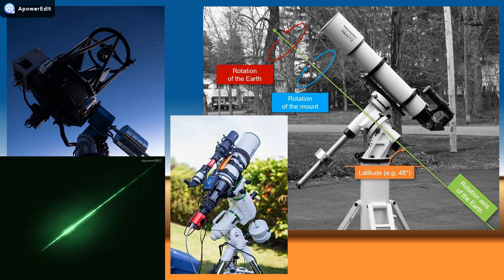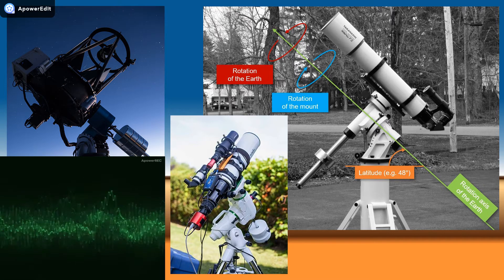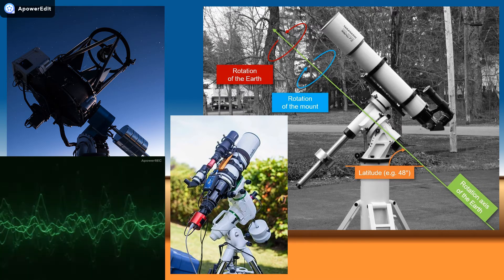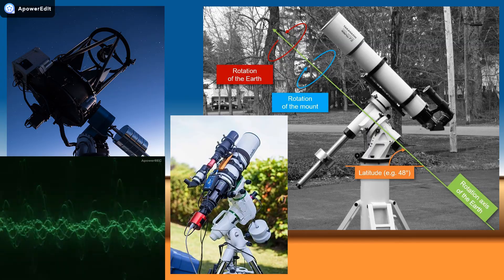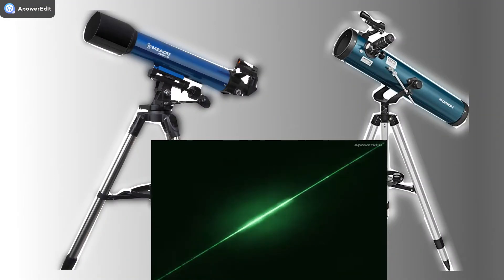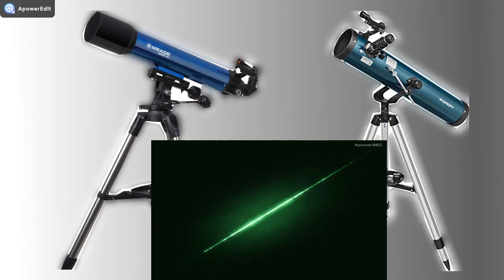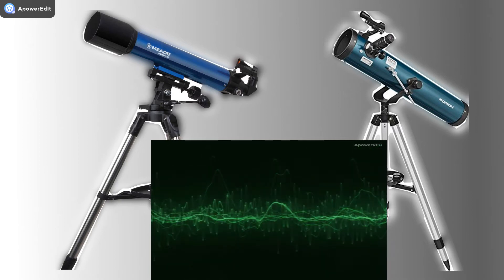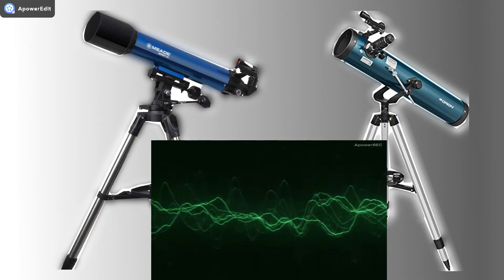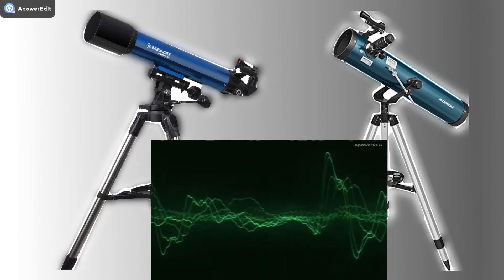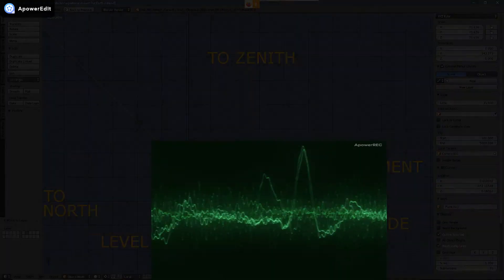The equatorial mount, used in an array of high-end telescopes to track objects across the sky, is a real problem for the Flat Earth Hypothesis. Unlike the popular Alt-Azimuth mount used by many backyard astronomers, the equatorial mount only requires one axis of rotation to track a celestial object.